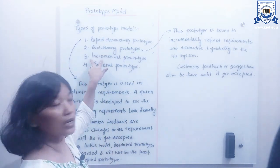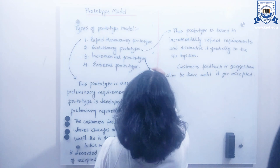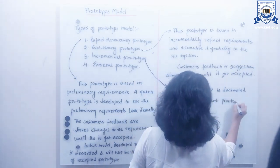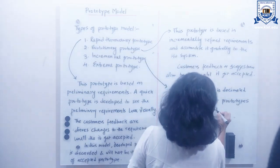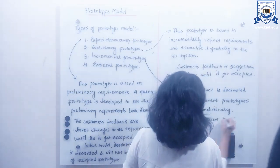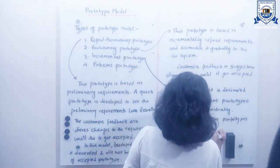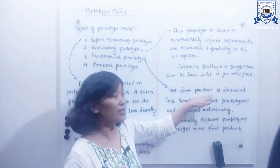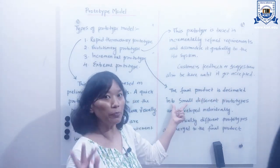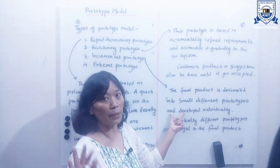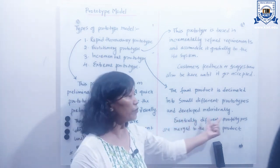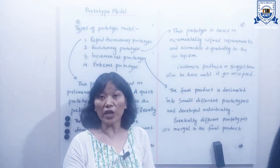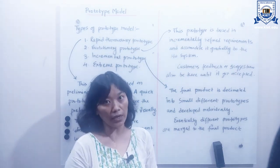The third prototype model is incremental prototype. In the incremental prototype, the final product is divided into small, different prototypes. This kind of prototype saves feedback time for both the customer and the application development team.